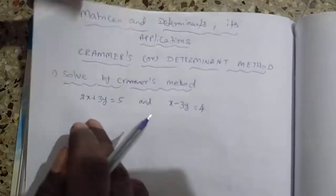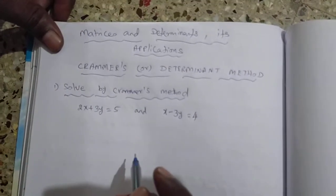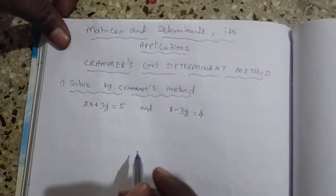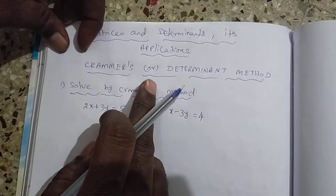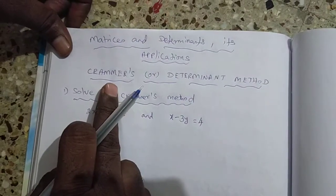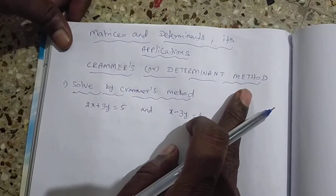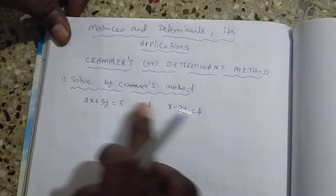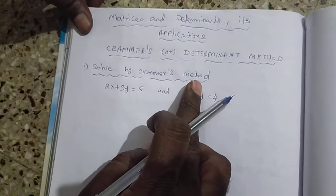Dear students, now I am going to take another concept: Cramer's Rule, otherwise called the Determinant Method. We are going to solve two equations by the method of Cramer's rule.